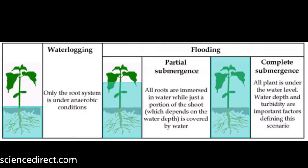As you can see here, the first scenario on the left is what is known as waterlogging, which involves only the root system being submerged underwater. Shown here in the middle is partial submergence, which occurs when only a portion of the shoot system and the entire root system is underwater. On the far right, you can see complete submergence, when both the root and shoot systems are fully beneath the water level. This is the most stressful scenario.